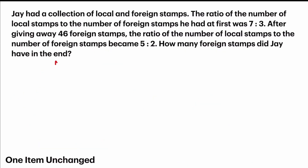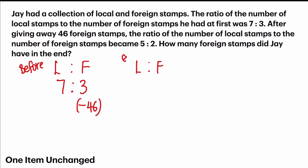Jay had a collection of local and foreign stamps. The ratio of the number of local stamps to the number of foreign stamps he had at first was 7 is to 3. After giving away 46 foreign stamps — and nothing was done to the local stamps — the ratio became 5 is to 2. Based on two ratios given, you know there is one item that's unchanged: that is local stamps. So let's look at the two numbers, 7 and 5. The common multiple is 35.